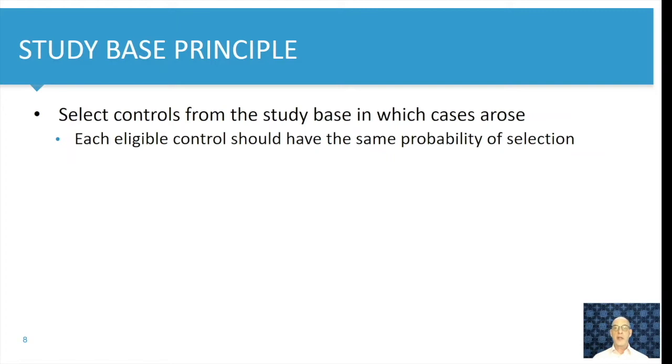And once you have selected all potential controls, you have to make sure that the selection of the control is done randomly or at least that each eligible control has the same probability to be selected as a control.